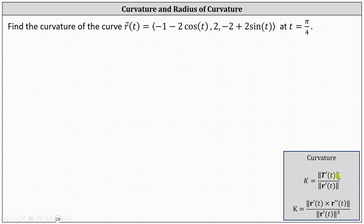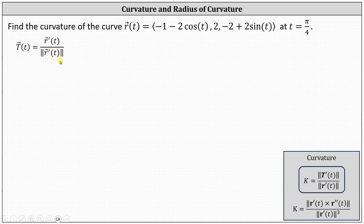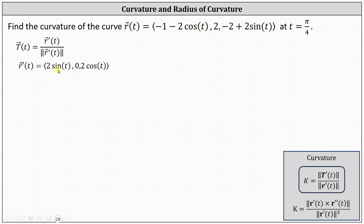Before we can determine T prime of t, we need to determine the unit tangent vector function T of t, which equals r prime of t divided by the magnitude of r prime of t. To find r prime of t, we differentiate each component of r of t. The x component is the derivative of negative one minus two cosine t, which is two sine t; the y component is the derivative of two, which is zero; and the z component is the derivative of negative two plus two sine t, which is two cosine t.